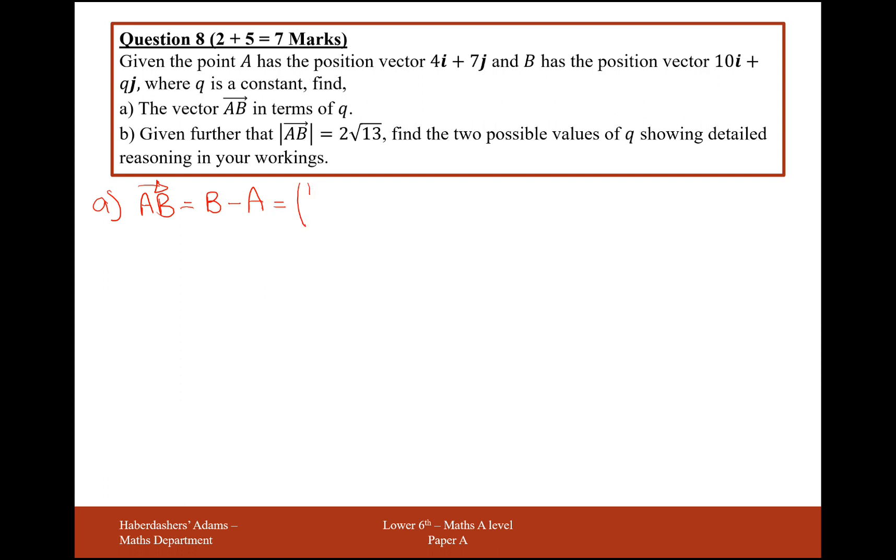So this is going to be 10q, take away 4, 7. So this here is going to be 6i plus q minus 7j, just like that.